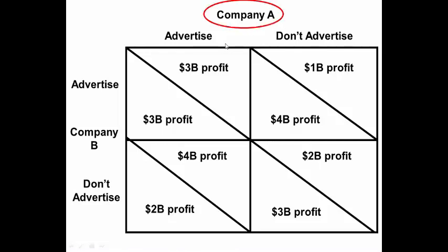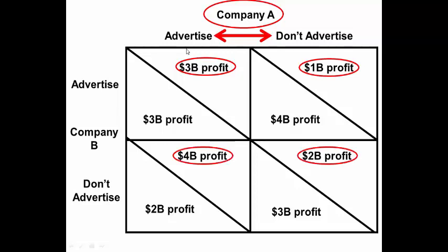Let's start with Company A. We'll put an oval around Company A and look at whether to advertise or not advertise. We'll circle the upper right-hand corner numbers and draw arrows to those values.